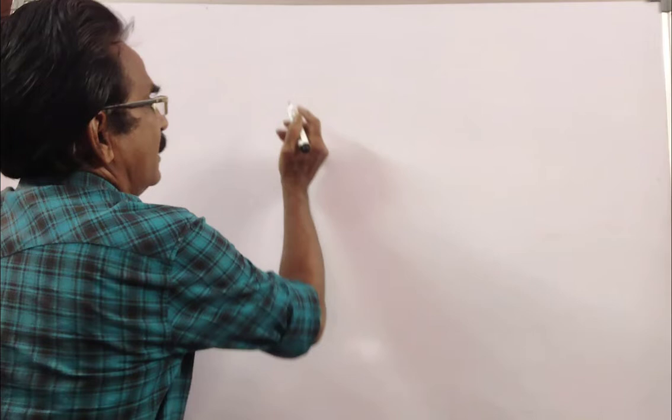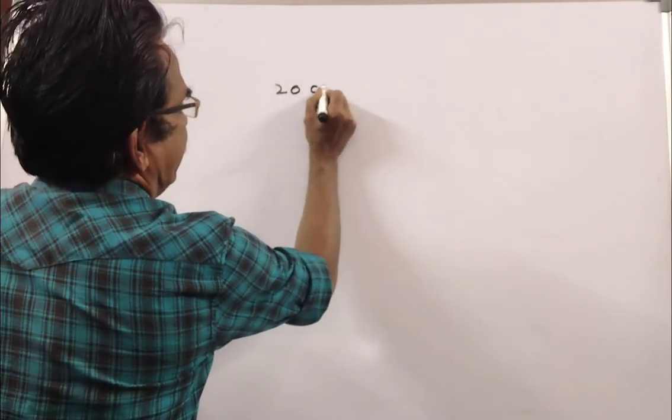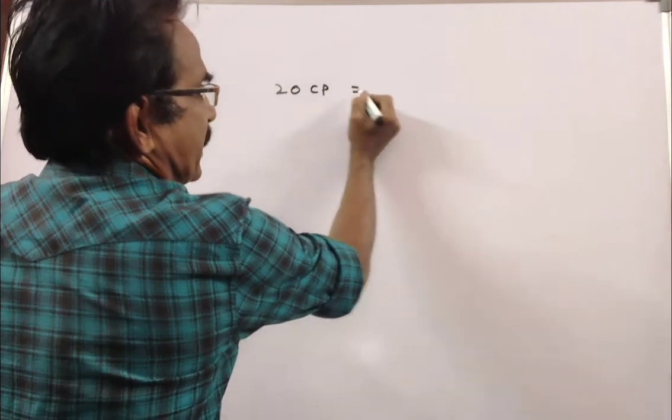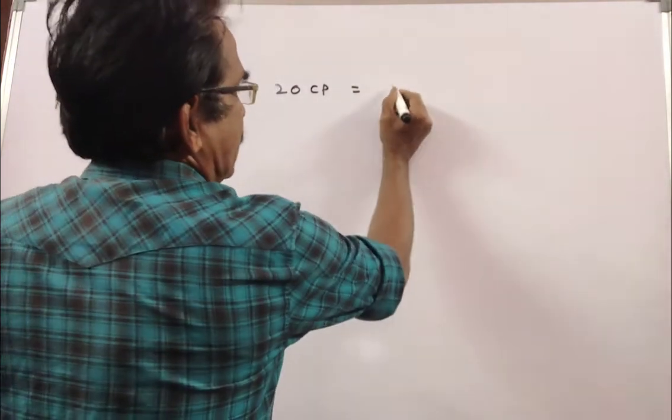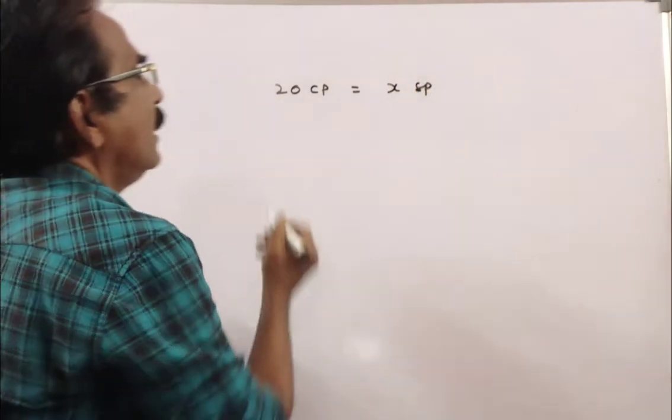The cost price of 20 articles is equal to the selling price of X articles. That is, 20 CP is equal to X SP.